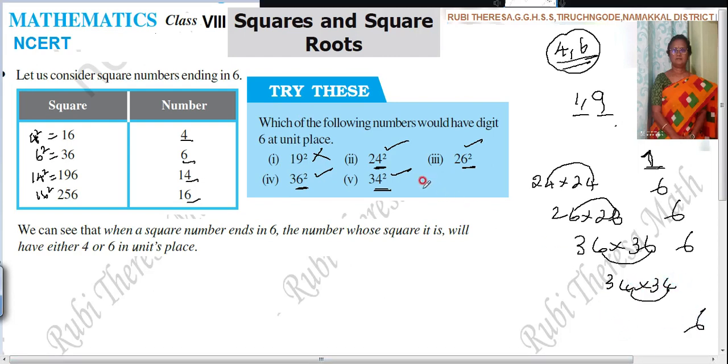So, the numbers which are 4 and 6 in unit place, then their square numbers end in 6. Their square numbers end in 6. Do you follow?